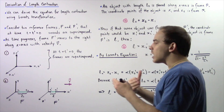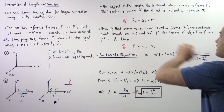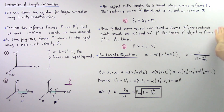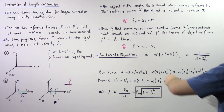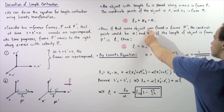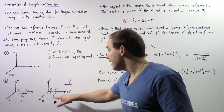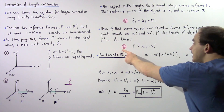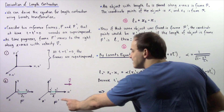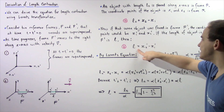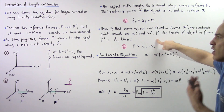Now let's suppose our object is placed into frame f. If that object is found in frame f, the coordinate points would be different. The coordinate points are given by x1' and x2'. If the length of the object is defined by the variable L, then equation B gives us the length as it lies along the x' axis in frame f: L is equal to x2' minus x1'.